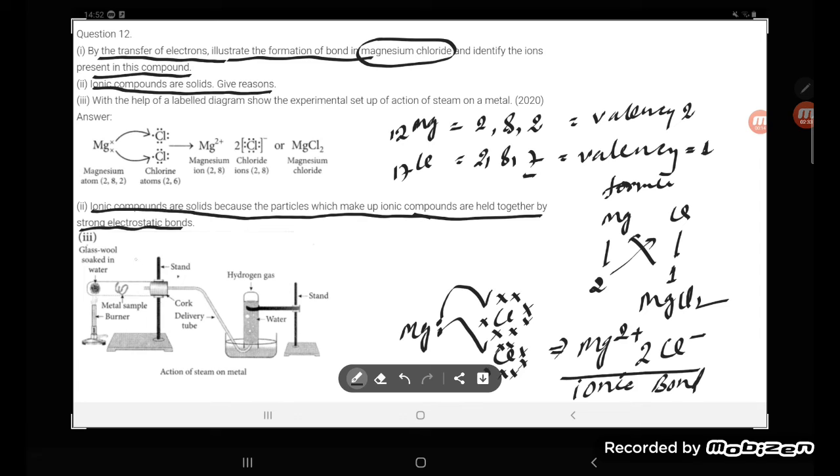bond, or by strong electrostatic bonds. That is why they are solid. With the help of the labeled diagram, show that experimental setup of action of steam on metal. So grass wool soaked in water.